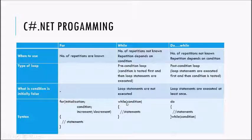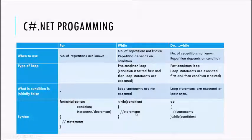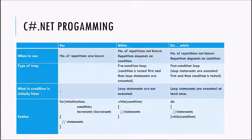In the while loop, if the condition is true then only the statements are executed. In the case of the do-while loop, it executes the statements first and then checks the condition. So if the condition is false, the statements are still executed at least once, whereas in the while loop they are not executed at all.